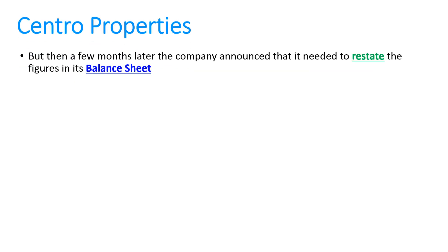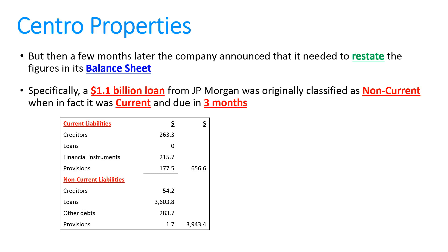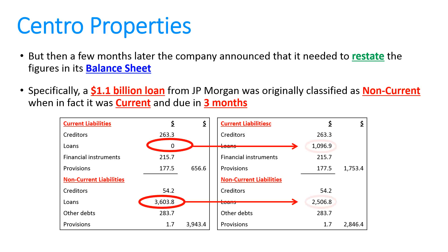However, a few months after releasing that balance sheet, the company announced they needed to restate some figures. Specifically, a $1.1 billion loan from JP Morgan was originally classified as non-current when in fact it was current and due in three months. So $1.1 billion needed to move into current liabilities and out of non-current. It wasn't a simple obvious mistake — it involved the fine print and terms of the loans — but fundamentally they had misclassified a loan that should have been current.